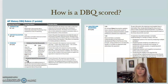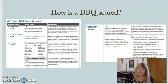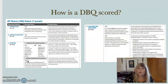The next two points are the analysis and reasoning points. One point comes from sourcing the documents, so we're going to review the HAPPY document sourcing chart so that you can source a document in each one of your body paragraphs. Your thesis and contextualization are in your intro paragraph — about three to four sentences to introduce and contextualize, then your thesis in about one sentence. Your evidence is spread over three body paragraphs, with about two documents per paragraph and one HAPPY sourcing per paragraph.